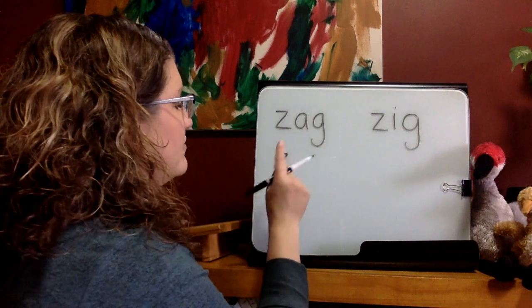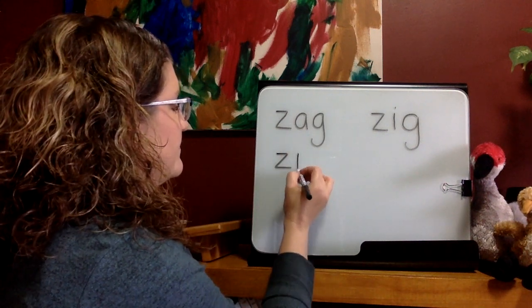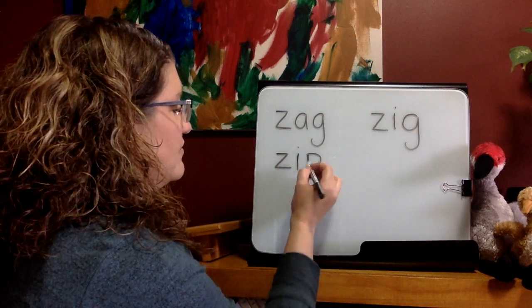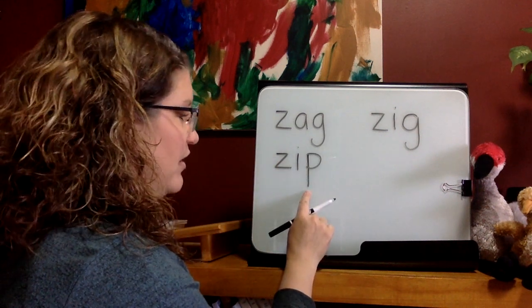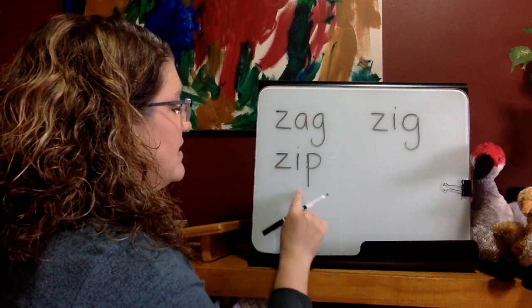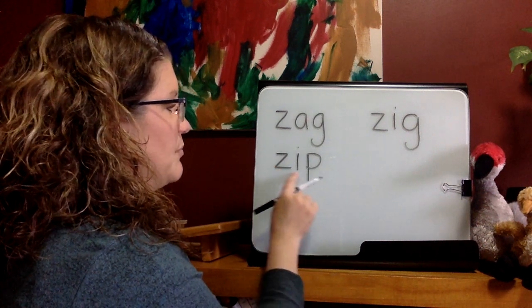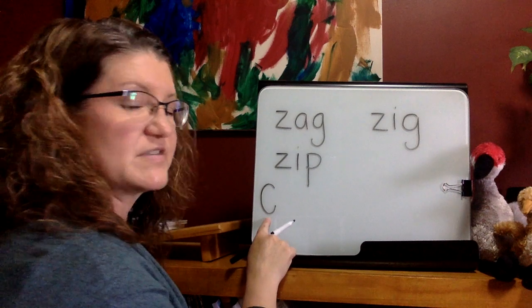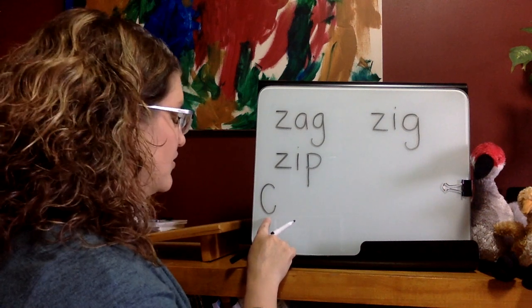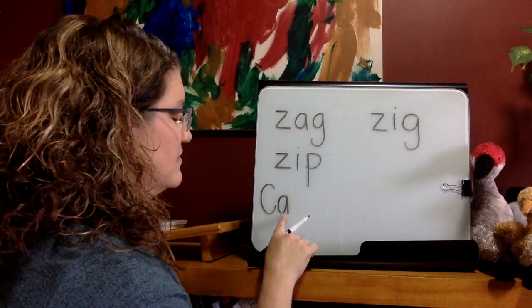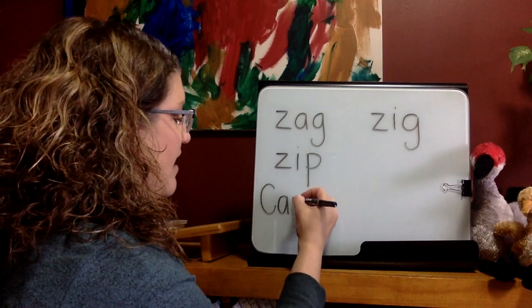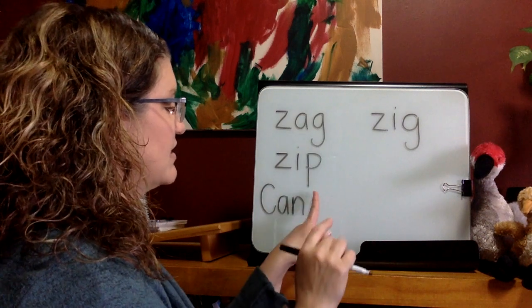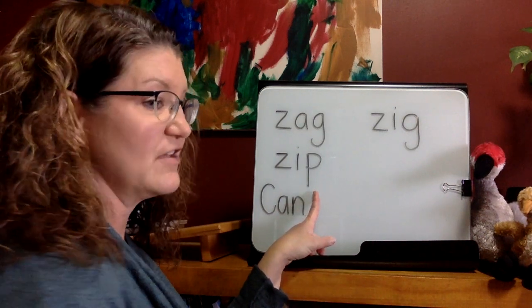One more. Sound — Z. Sound — yes, I. Sound — yes, P. Blend — 'zip.' Here comes a sentence, starting with a capital. First sound — yes, K. Sound — yes, A. Sound — yes, N. Before my next word, what do I need? Yes, a finger space.